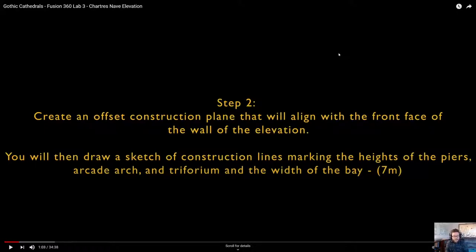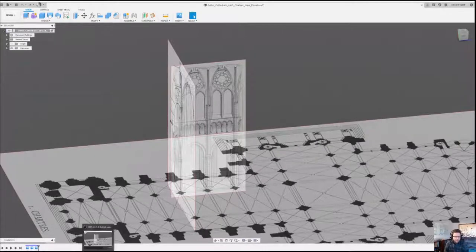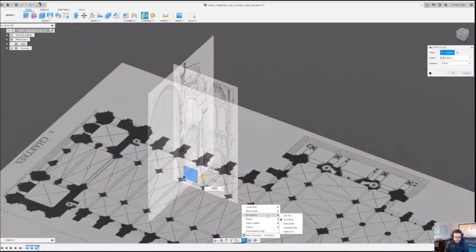The next step is to create an offset construction plane that aligns to the front face of the wall of the elevation. We're going to take the canvas we already have and push off from it a little bit so we're drawing on the correct plane. The plane we want is not dead center in the middle of the pier — we want it on the front face where the spandrels are for the church.